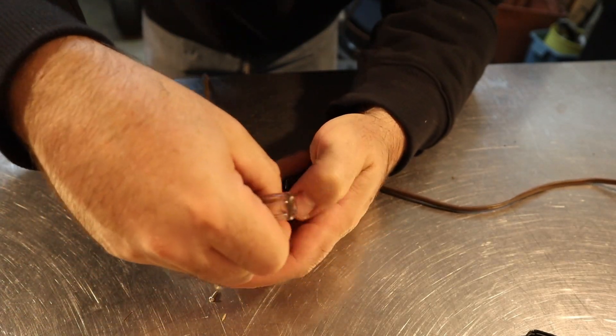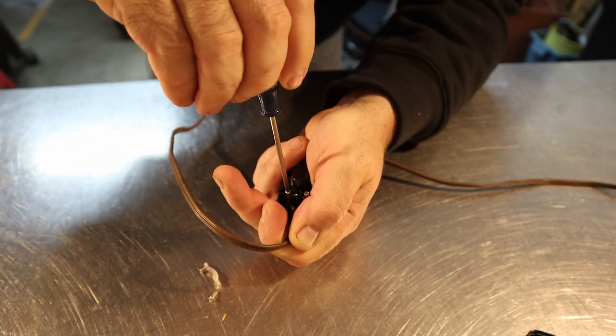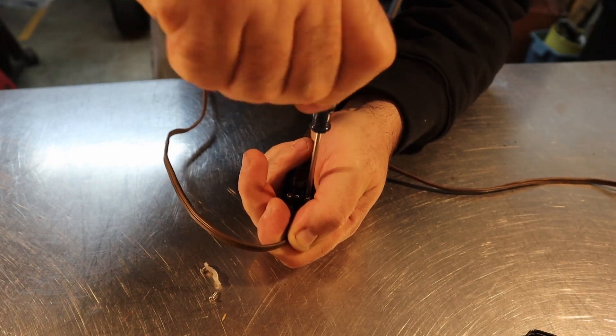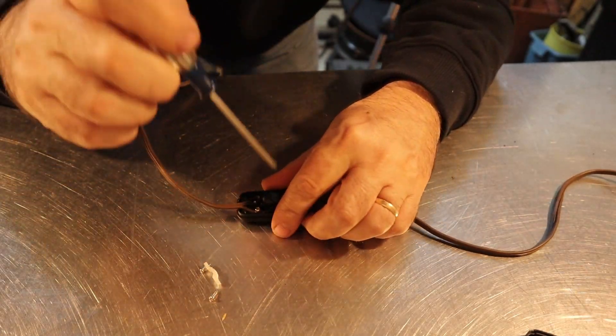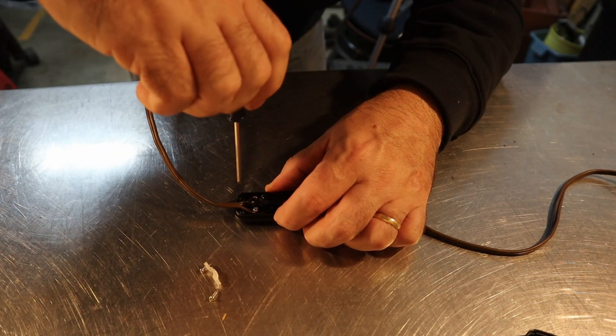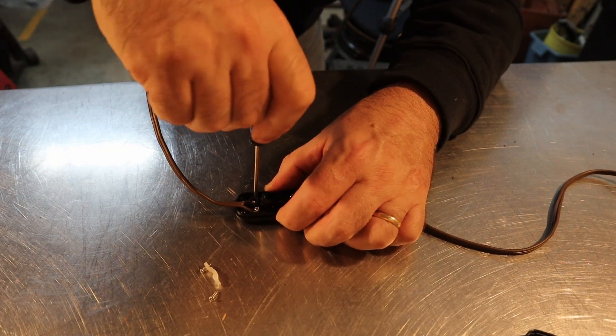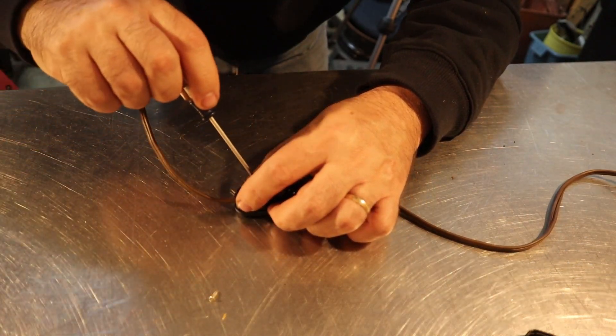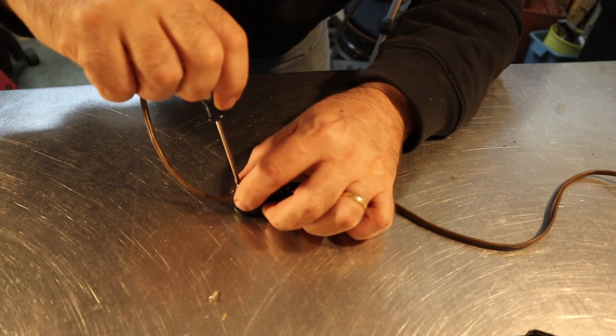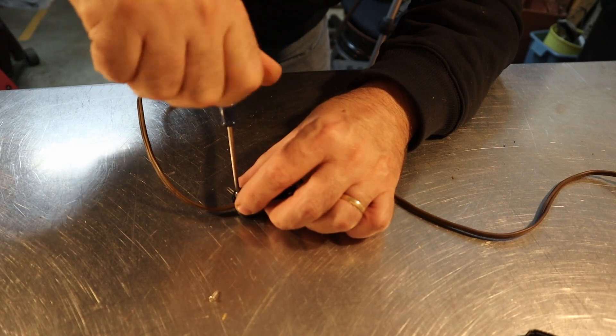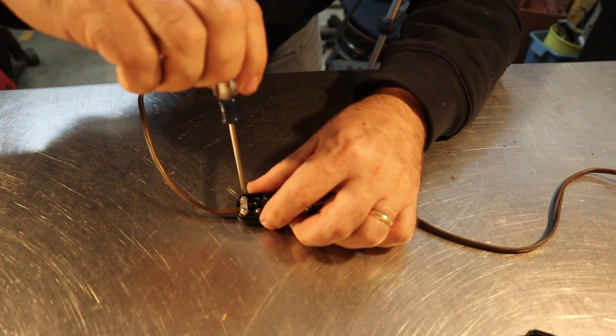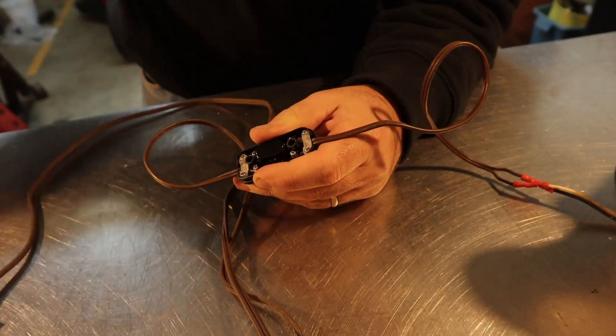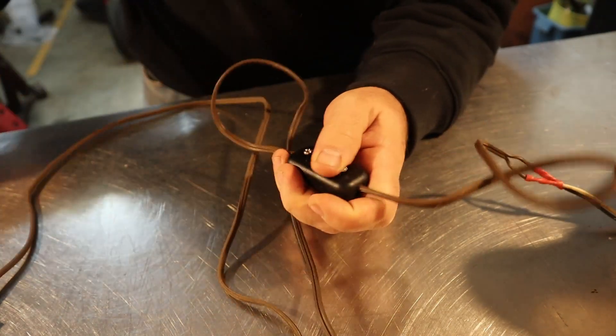Okay, got those wires inserted. We're going to tighten the screws down. So this is actually a fairly substantial switch compared to what I'm used to seeing. Usually they just have little blades that cut into the wires. They don't usually have terminals that have screws on them. This is actually pretty nice. Alright, that's tight. Let's get the cover back on, tighten these up.